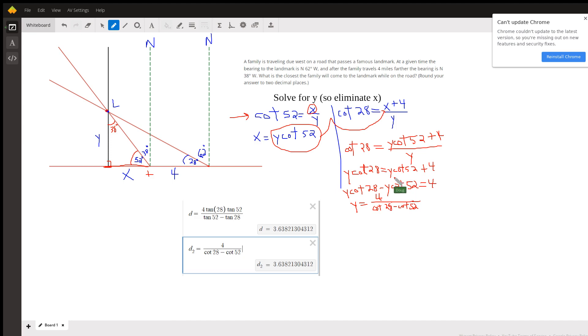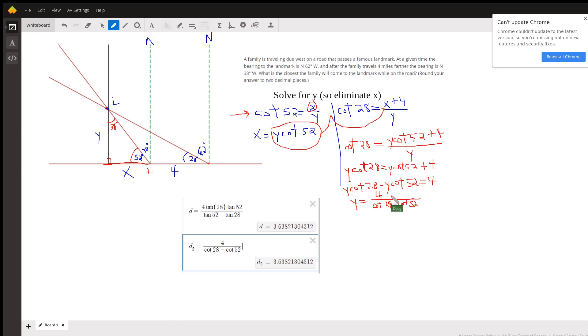Get the terms containing y on the same side of the equal sign by subtracting this term. Factor out the y, and then divide 4 by cotangent 28 minus cotangent 52. There's your answer.